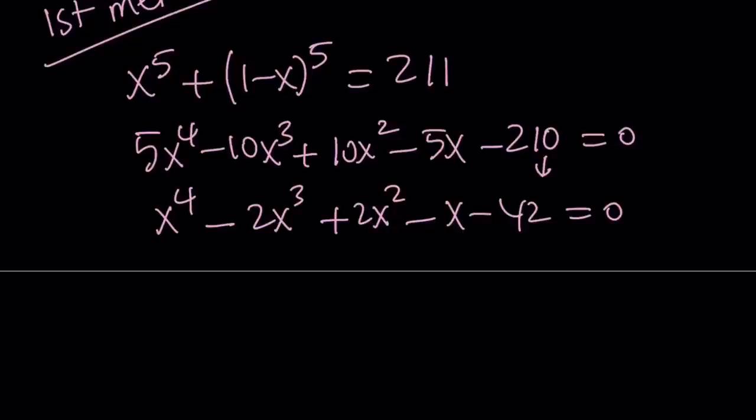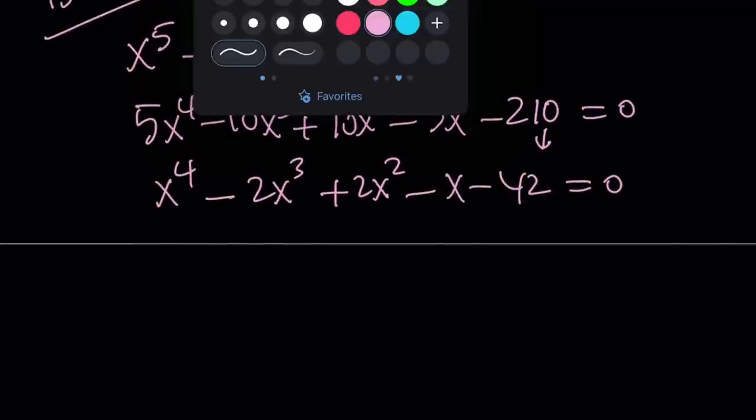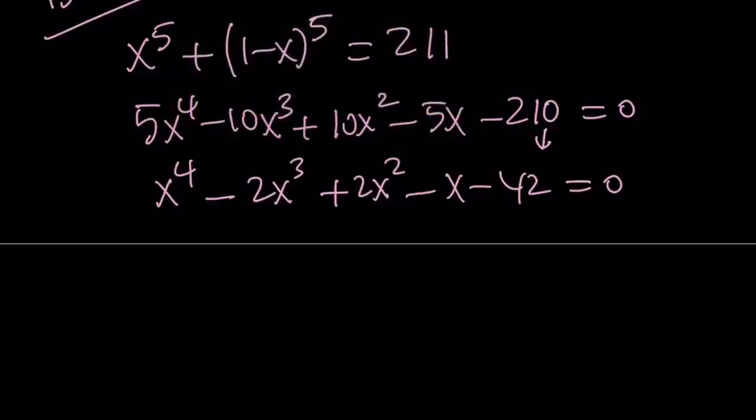So that's a quartic equation, but this time it's monic. So the coefficient of x to the 4th is 1, which is nice. And what you can do is you can look for a rational solution because you can't figure out irrational solutions before finding the rational ones.